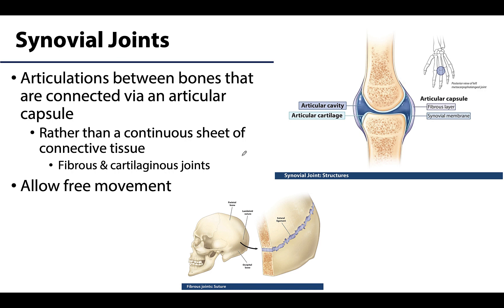Synovial joints will be the focus of the majority of our conversations during musculoskeletal anatomy for two reasons. First, they are the most numerous type of joint, particularly when talking about the appendages, so it's hard to avoid a synovial joint when discussing musculoskeletal anatomy. Secondly, as synovial joints are freely movable and capable of more movement, this also lends to a reduction of stability compared to a suture in the skull, and with a reduction of stability, clinical issues tend to arise.